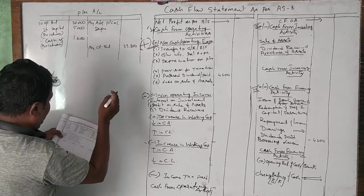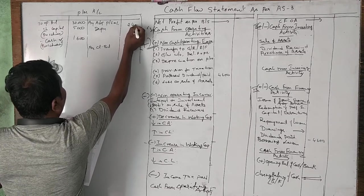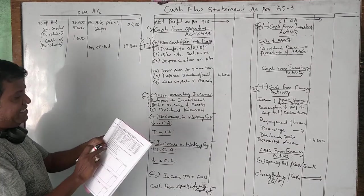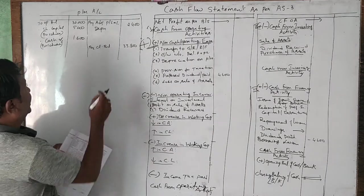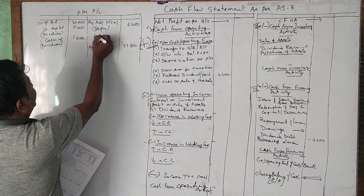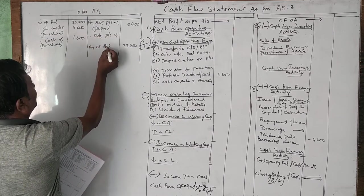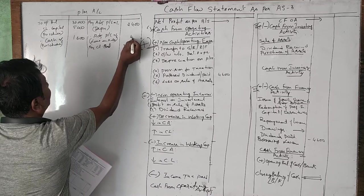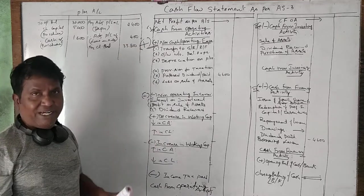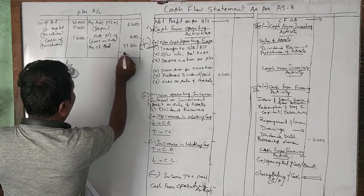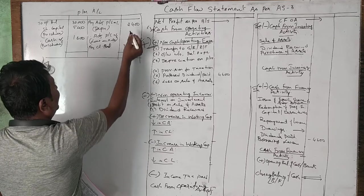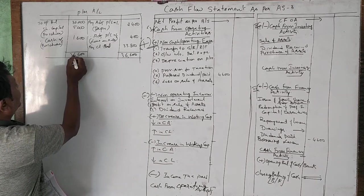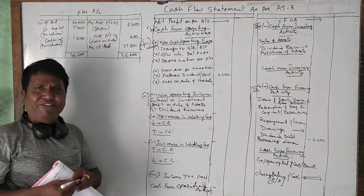The fourth adjustment: depreciation on machinery is 2,400. The sixth adjustment: loss on sale of machinery — loss on sale of machinery is 400 rupees. That's all the adjustments related to machinery. If you check the machinery account it will tally — one side is 36,600 and the other side is also 36,600, and there is no balance remaining. Everything is given.